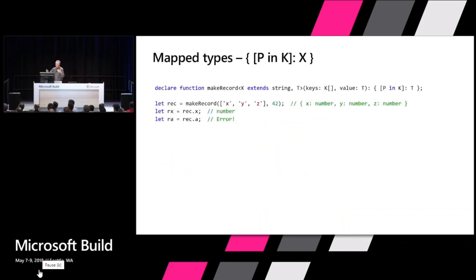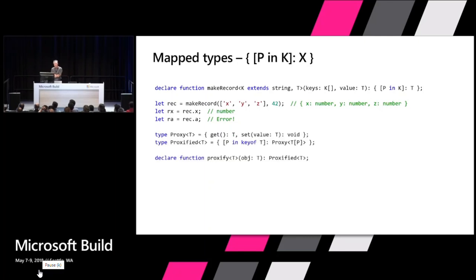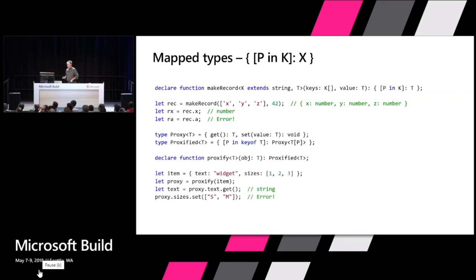Mapped types are sort of the same idea — you can make a function that creates a record type where you pass in the names of the properties you want and the value for each property, and we can strongly type what comes out. You can also write things like wrapping a proxy around an object and have us understand how it all pans out. Here's an example that wraps a get and set proxy around every property in an object type — if you give us an item, you get back something with the same properties but each property has been turned into a getter or setter of the same type, which happens a lot in JavaScript frameworks.